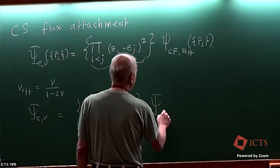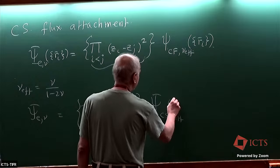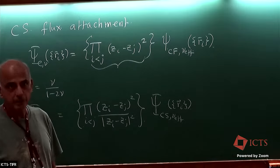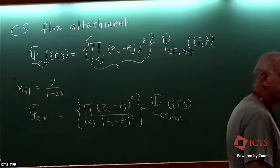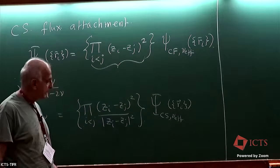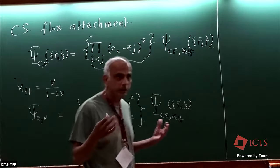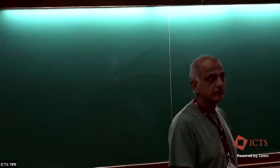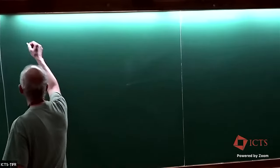We write ψ_e(ν) as a phase factor times ψ_CS at ν_effective. We call these Chern-Simons fermions to distinguish them from Jain's composite fermions. This phase factor depends on the positions of all the particles — it's a very complicated many-particle position-dependent phase — and we can think of it as a gauge transformation, since a gauge transformation multiplies the wave function by some position-dependent phase.